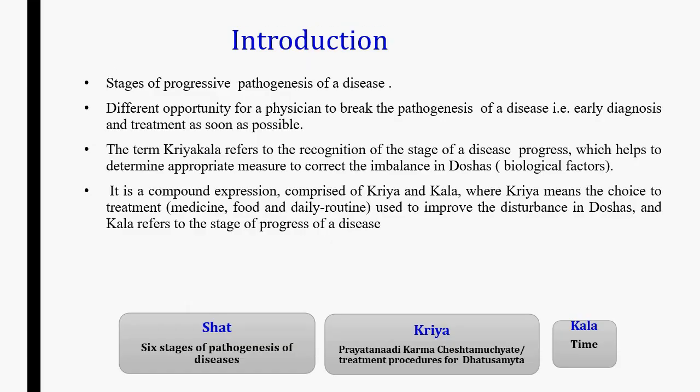Shat means six. Kriya Kaal is made up of two words: Kriya means treatment procedures, and Kaal means time. Acharya Charak has defined Kriya as bringing vitiated doshas, dhatus and mal into Sammyeavastha with the help of different types of drugs, ahar and vihar. Upacharak has mentioned that disease is the state of dhatu vaishamya and Sammyeavastha is considered as nirogata or health. Thus, Kriya is considered as chikissa and Kaal is considered as opportunity. Therefore, Kriya Kaal means opportunity or time of treatment.